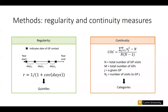Continuity is calculated using the continuity of care index, which looks at the distribution of a person's GP visits to different providers. If someone consistently sees the same GP, they'll have a high score; if they keep seeing different GPs, they'll have a low score. Both indices range from zero to one and are categorised for analysis — regularity is converted into quintiles, whereas continuity is split into four roughly equal groups.